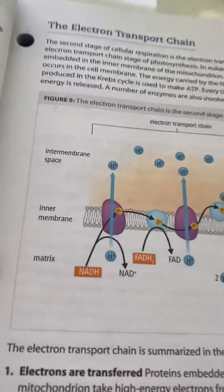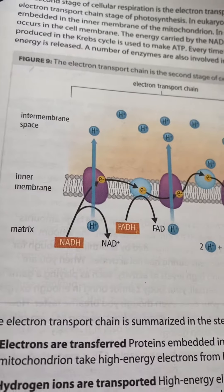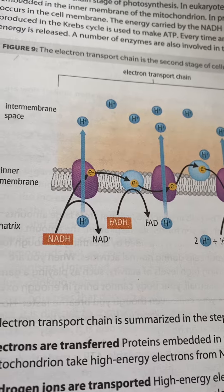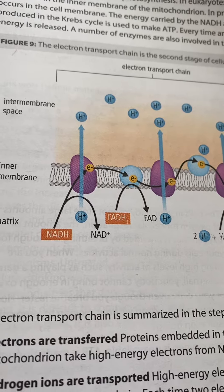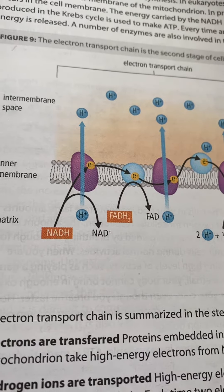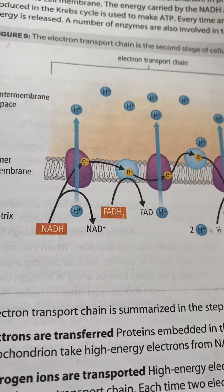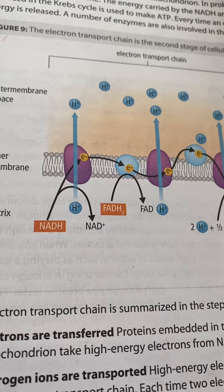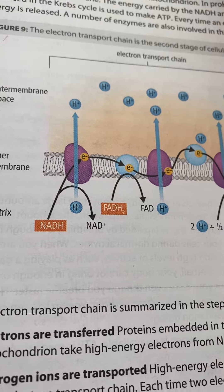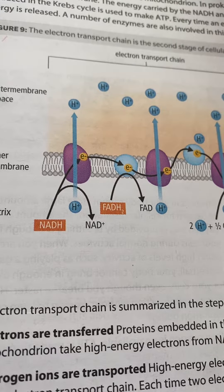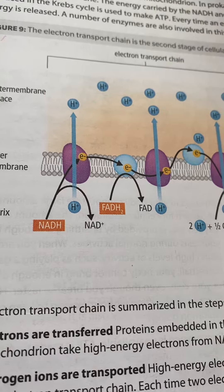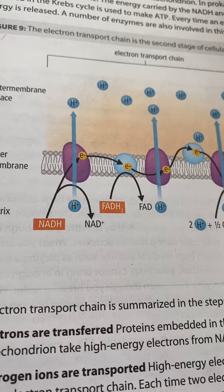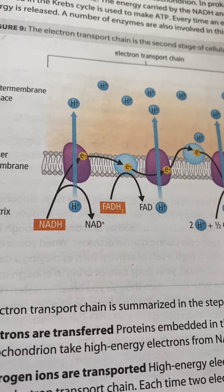The electron transport chain. This is the second stage of cellular respiration. It is similar to the electron transport chain of photosynthesis. It creates a process occurring in the inner membrane of the mitochondria.